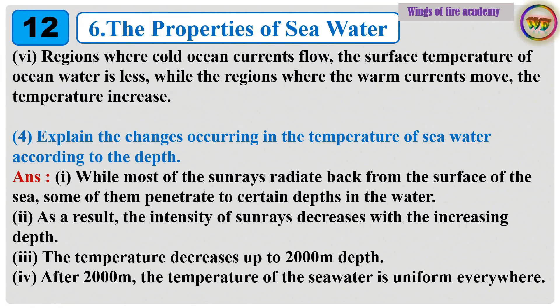Regions where cold ocean currents flow, the surface temperature of ocean water is less, while the regions where the warm currents move, the temperature increases.